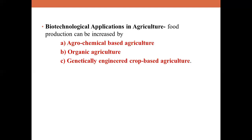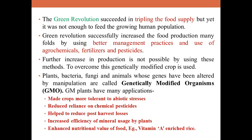The green revolution succeeded in tripling the food supply, but it was not enough to feed the growing human population. Increased yields were due to improved crop varieties, better management practices, and agrochemicals like fertilizers and pesticides. However, in developing countries like India, agrochemicals are expensive and further yield increases using conventional breeding methods are very difficult.